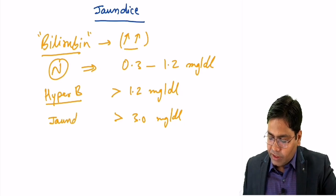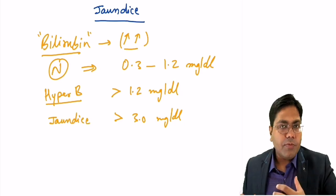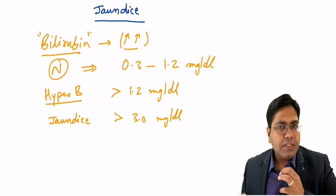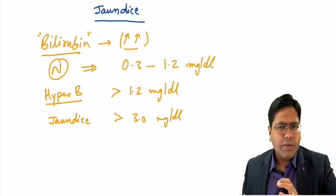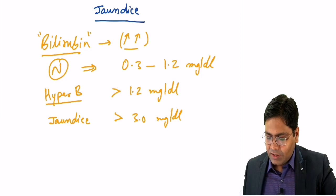Because in this condition, this excess of bilirubin will be visibly seen on skin, mucous membrane and sclera, making it a yellowish color.